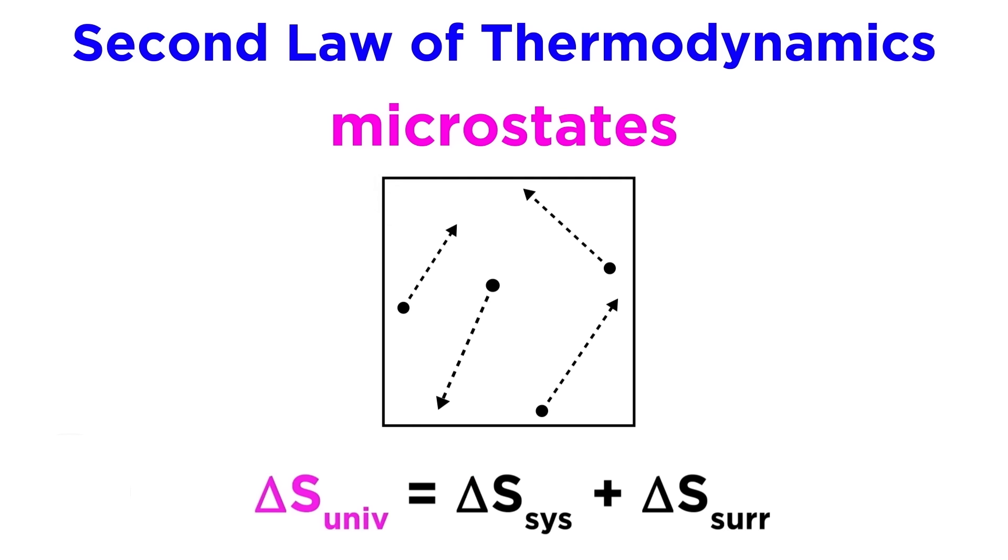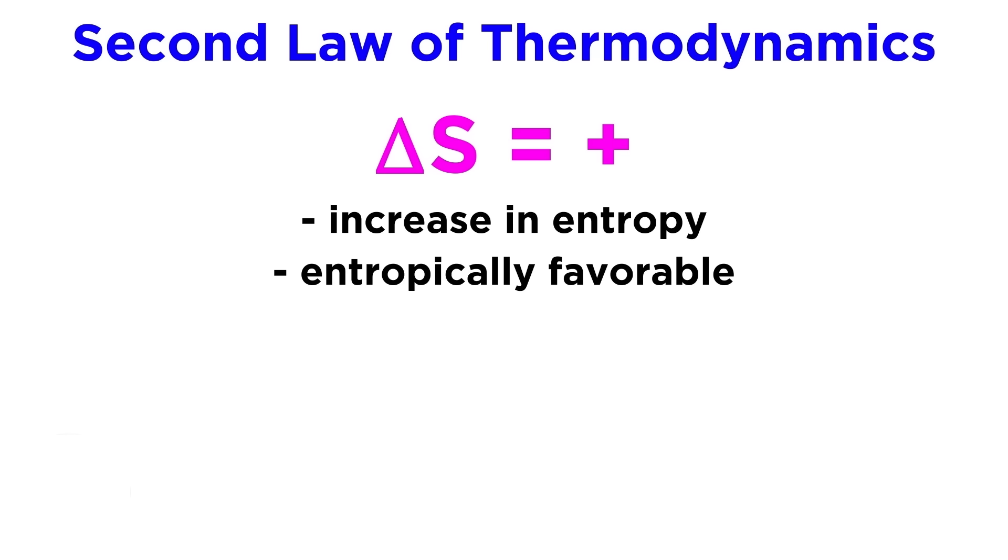So given that delta S universe is given by delta S system plus delta S surroundings, we can use this equation to predict whether a process will be spontaneous. If delta S universe is positive, the entropy of the universe increases, and the process will be spontaneous.